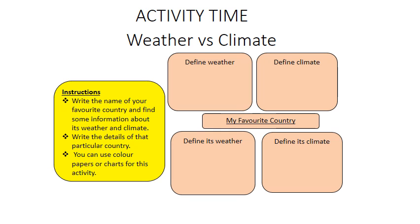I'm sure you have learned about the basic differences between weather and climate. Now here is an activity for you: first, learn the definitions of weather and climate. Then take a chart paper, select any of your favorite countries, write its name, search for information about that country's weather and climate, and jot it down on the chart paper. You can also send me your pictures — I will appreciate those students who take interest and make the chart papers. Hope you have enjoyed this lecture. Thank you and have a nice day.